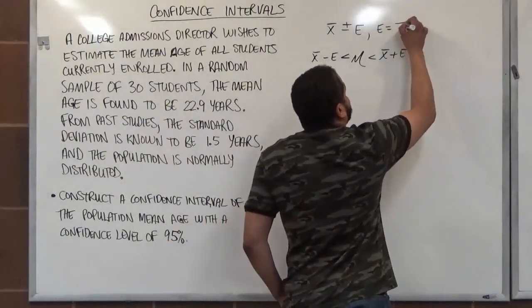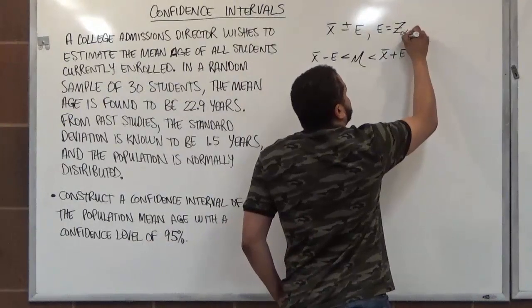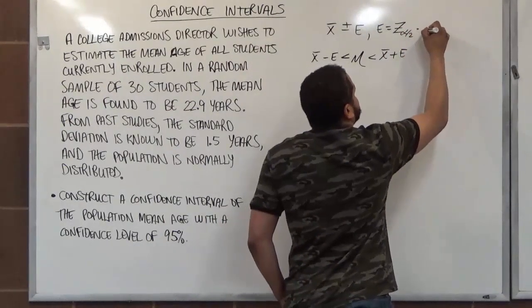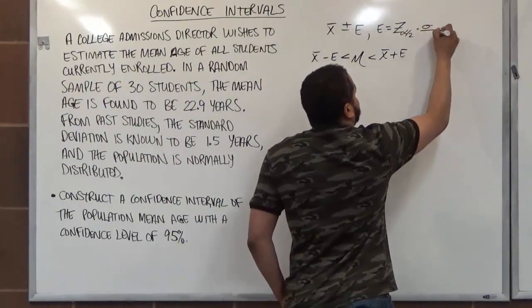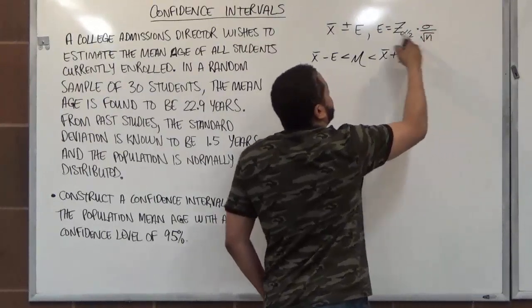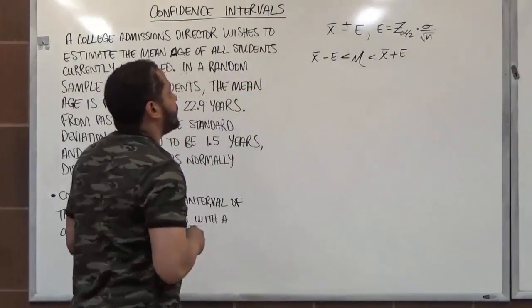So here our critical z-value, which is z of alpha divided by 2, multiplies by sigma, divided by the square root of n. And this is the formula to calculate our margin of error.